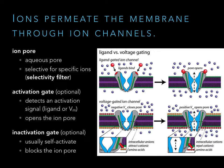Voltage-gated ion channels have charged amino acids in their activation gate that rearrange after the membrane potential changes. When the neuron is resting at a negative potential, the positively charged amino acids rest in a certain conformation. When the neuron depolarizes, they open up and ions can move through the membrane.